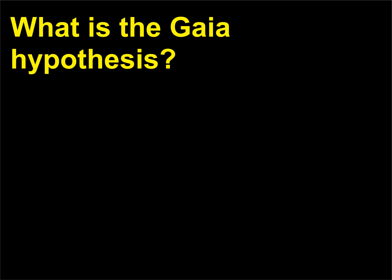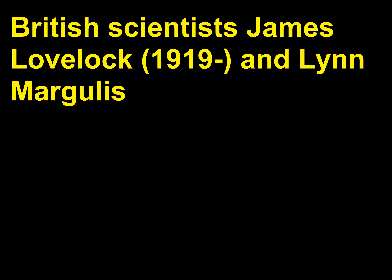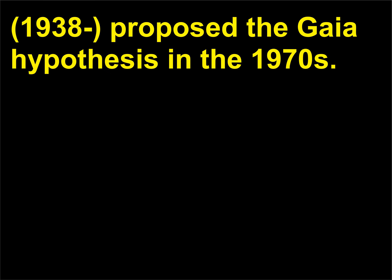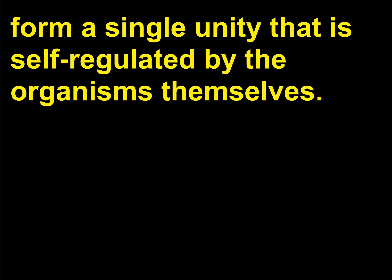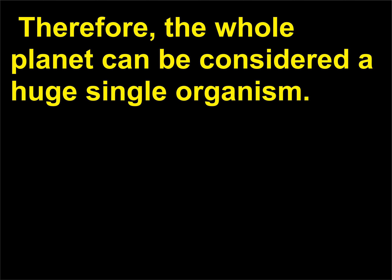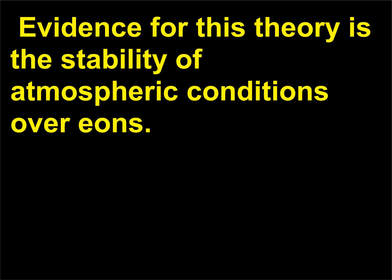What is the Gaia hypothesis? British scientists James Lovelock, 1919, and Lynn Margulis, 1938, proposed the Gaia hypothesis in the 1970s. According to the theory, all living and non-living organisms on Earth form a single unity that is self-regulated by the organisms themselves. Therefore, the whole planet can be considered a huge single organism. Evidence for this theory is the stability of atmospheric conditions over eons.